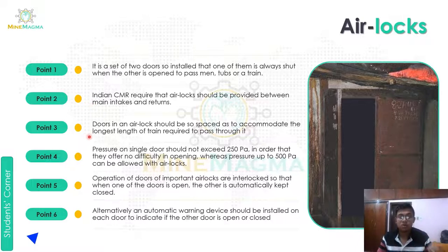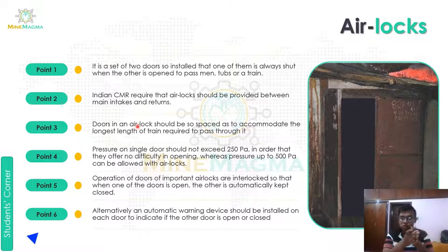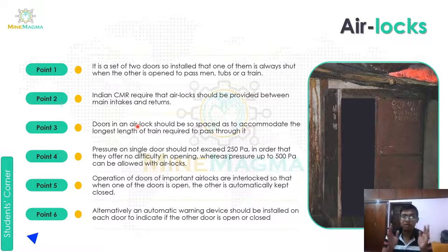Third point: doors in an air lock should be so spaced as to accommodate the longest length of train required to pass through it. The distance between the two doors is large enough that the longest train used in the mine can fit between them.